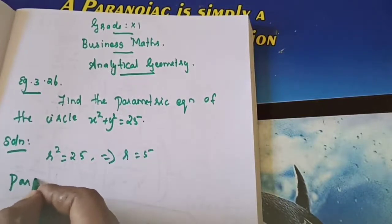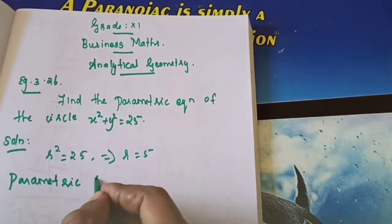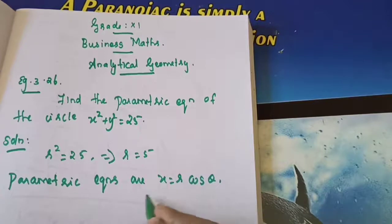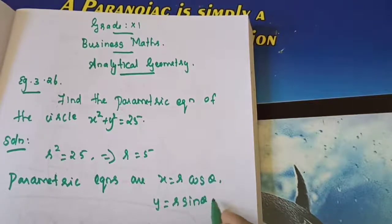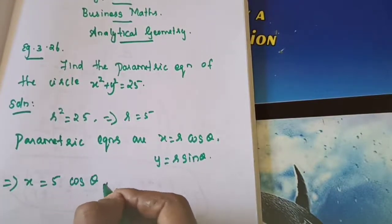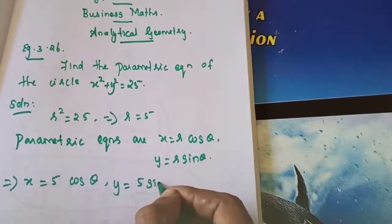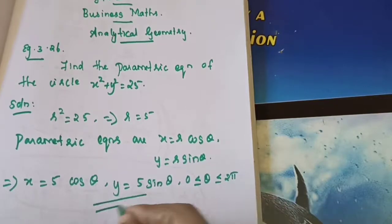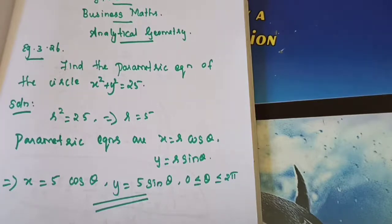So what are the parametric equations? The equations are x equals r cos theta, y equals r sin theta. Now substitute: x equals 5 cos theta, y equals 5 sin theta. The range is very important: 0 less than or equal to theta less than or equal to 2 pi. That is all. This is very easy — find the r value, write the parametric equations x equals r cos theta, y equals r sin theta, substitute the r value, then state the range.